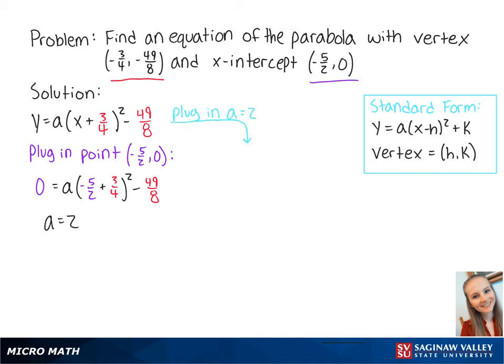Now we plug a equals 2 into our first equation. This gets us y equals 2 times (x + 3/4) squared minus 49/8.